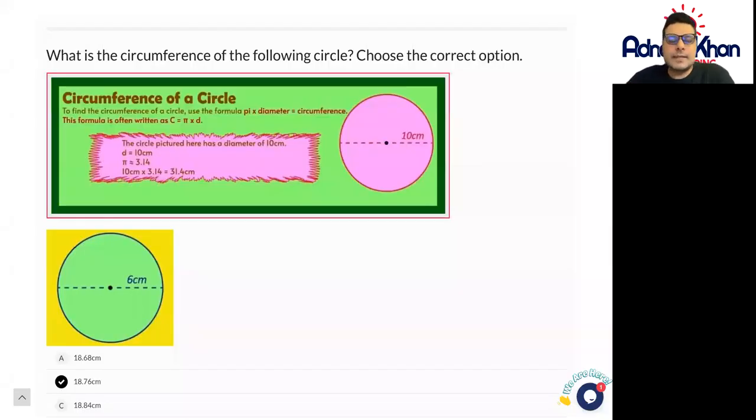Welcome to this lesson. This is called circumference of a circle. So to find out the circumference of a circle, we use the formula as follows. Our formula is going to be circumference equals pi multiplied by diameter.